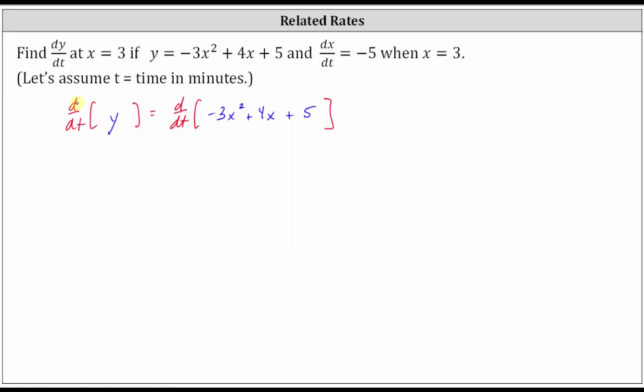On the left, the derivative of y with respect to t is dy/dt. On the right, we first have the derivative of negative three x squared with respect to t. So because we have an x term and we're differentiating with respect to t, we need to apply the chain rule,